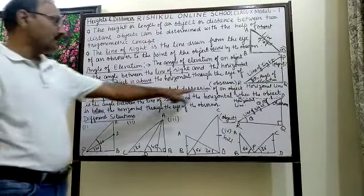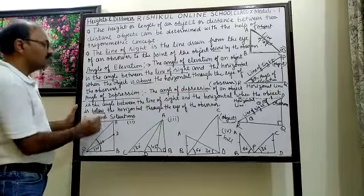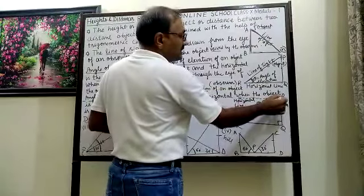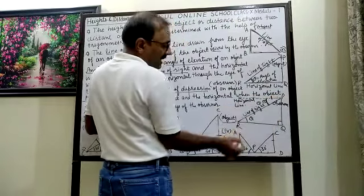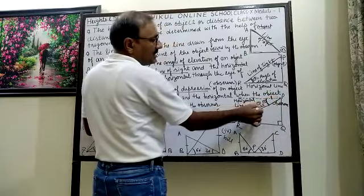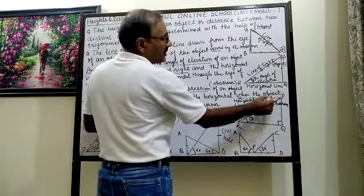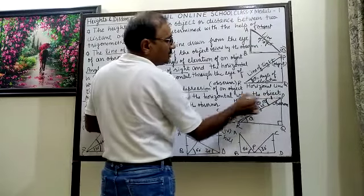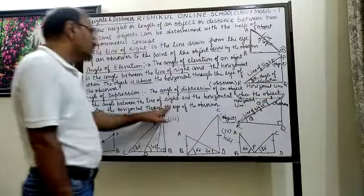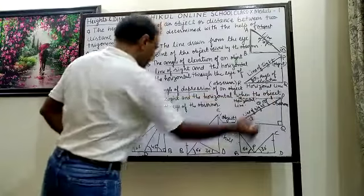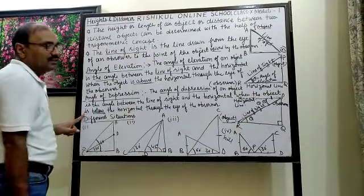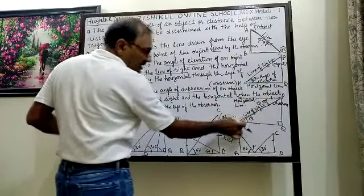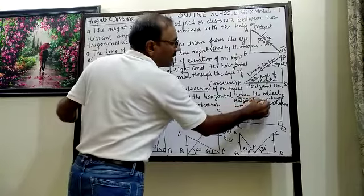Then comes the angle of depression, which has a similar definition. The angle of depression is the angle between the line of sight and the horizontal, where the observer is at point P and the object is at point R below. The angle between the line of sight and the horizontal line is the angle of depression. When the object is below the horizontal line, this angle is called the angle of depression.